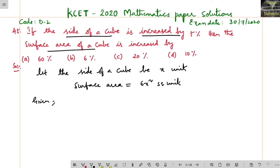Given in the question that the side of a cube is increased by 5%, this means dx/dt is equal to 5%, or 5x/100. Now the surface area...